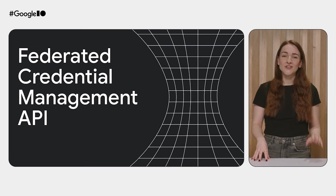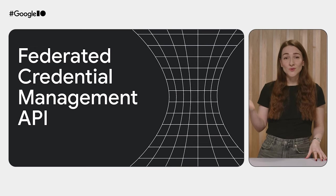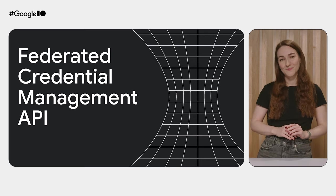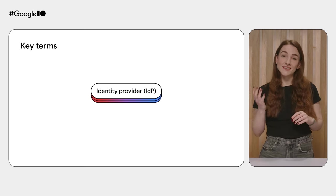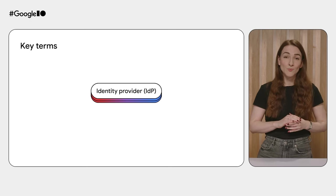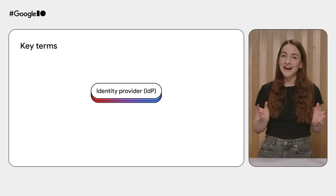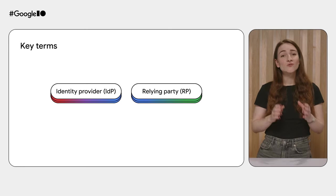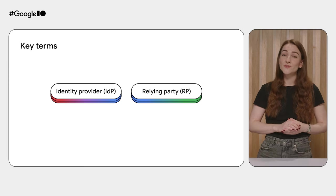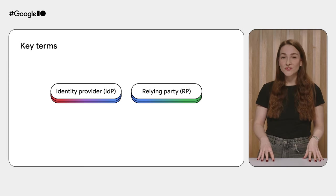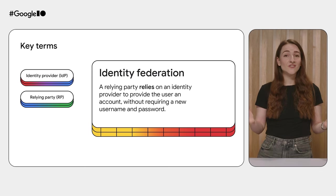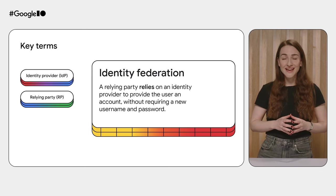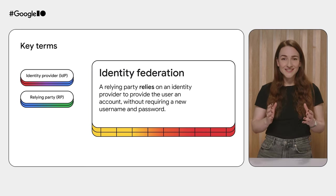Passkeys are great for streamlining sign-in, but before that, your users need to sign up in the first place. That's where Identity Federation is great — streamlining the creation and recovery of accounts. Identity Federation delegates the authentication of an individual to a trusted external party, an identity provider or IDP. A relying party, that's your website, relies on an identity provider to provide the user an account without requiring a new username and password.